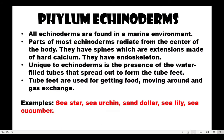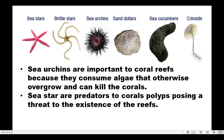Next, Phylum Echinodermata. All echinoderms are found in the marine environment. Body parts of most echinoderms radiate from the center of the body. They have spines which are extensions made of hard calcium, and their internal skeleton is called an endoskeleton. Examples are sea stars, sea urchins — that's where Patrick lives — sand dollars, sea lilies, and sea cucumbers.